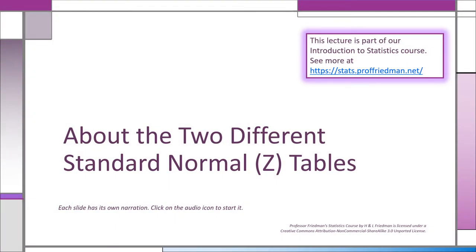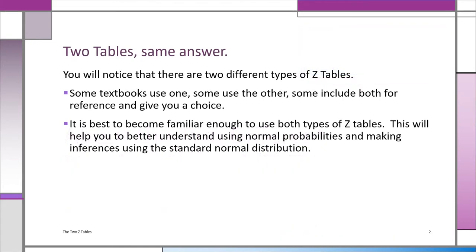Welcome. We're going to learn about the difference between the two different types of standard normal tables that you might encounter. You're going to see two different types of Z-tables. Remember the Z-table is the normal distribution, a special case of it, with a mean of zero and a standard deviation of one. Some textbooks use one of them, and some use the other. It's good to know how to use both of them, and we'll teach you how to use both of them.